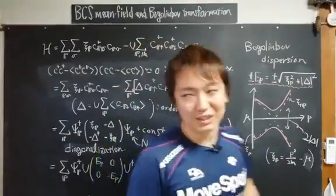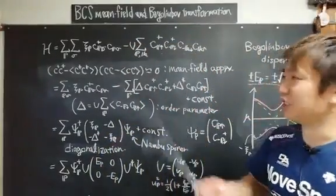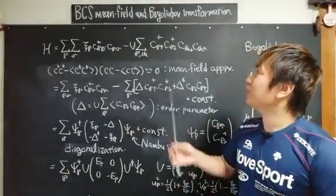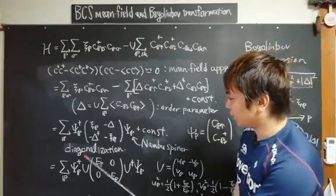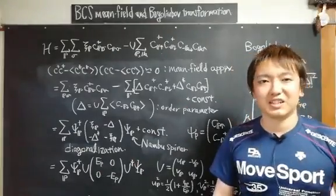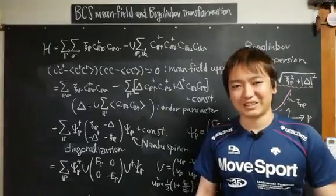That's all. This was just an explanation of the BCS mean field theory and the Bogoliubov transformation. Thank you.